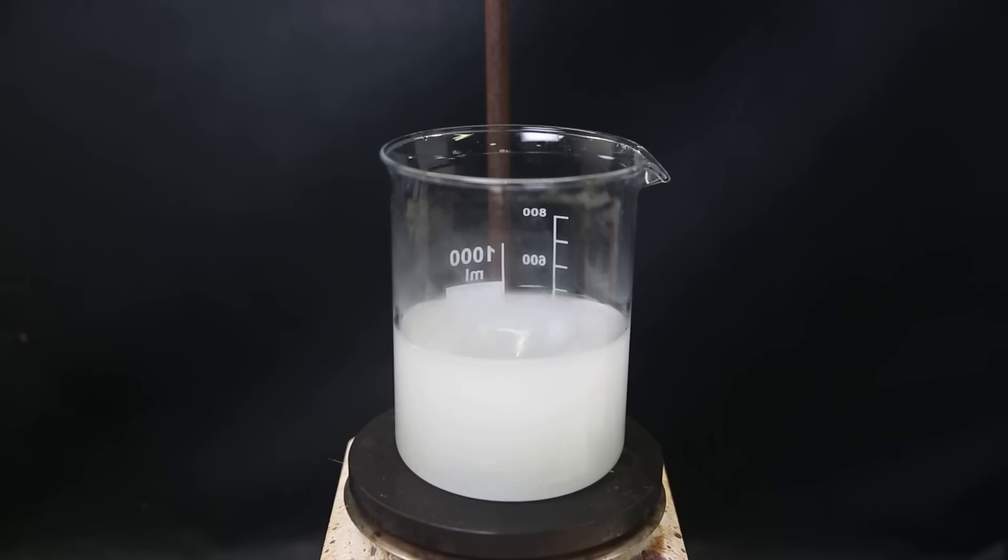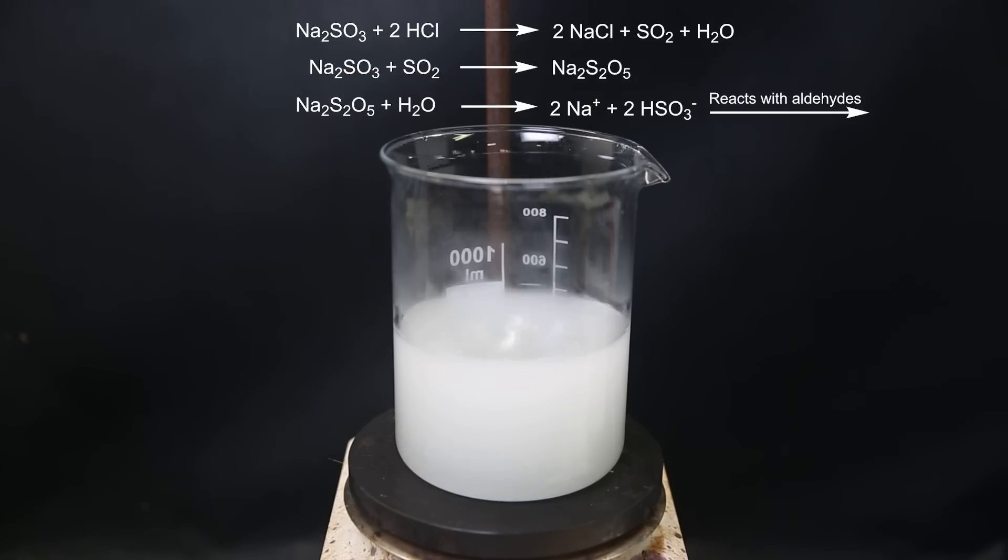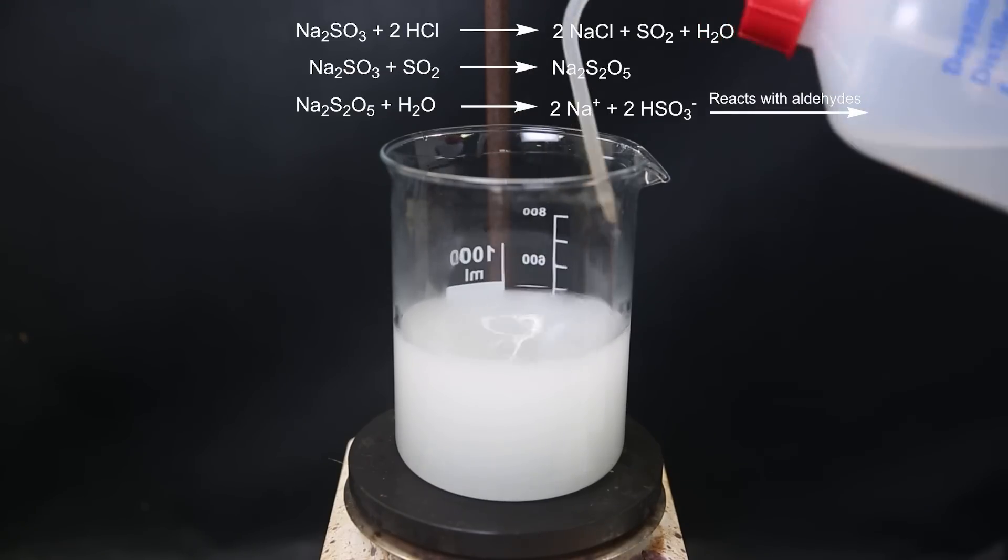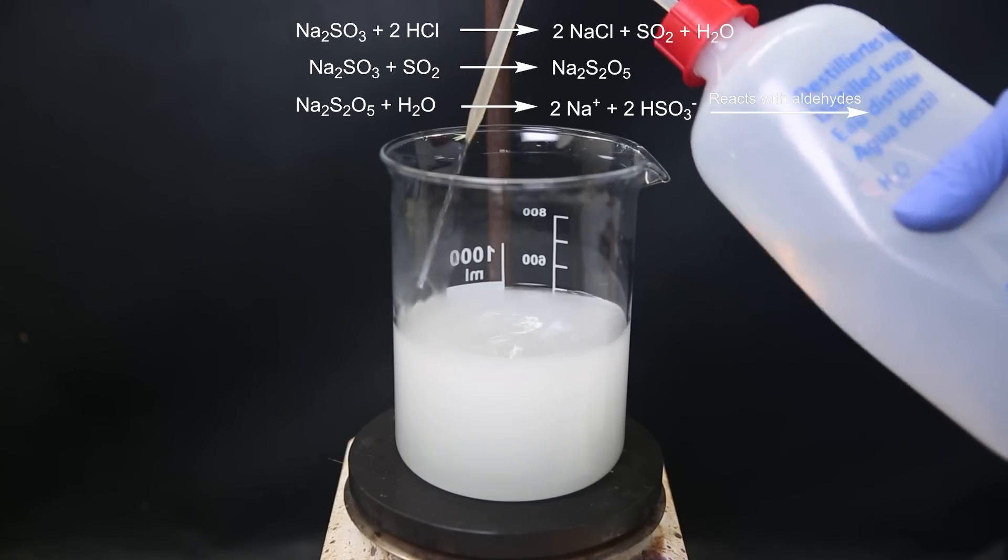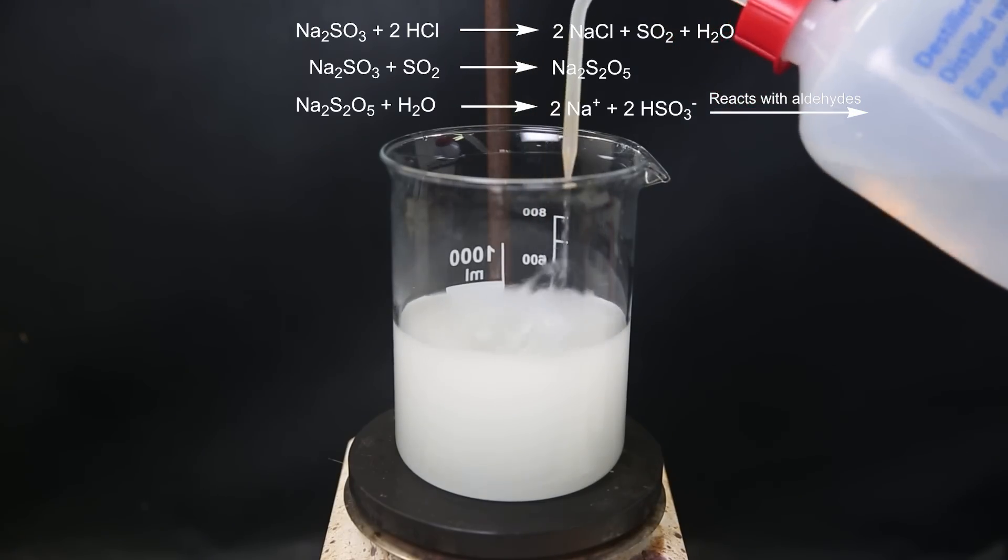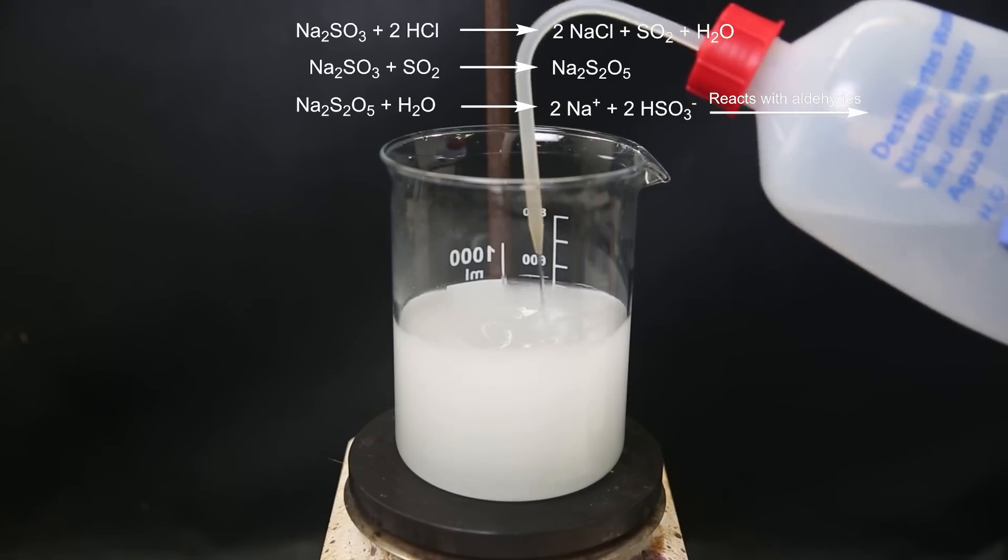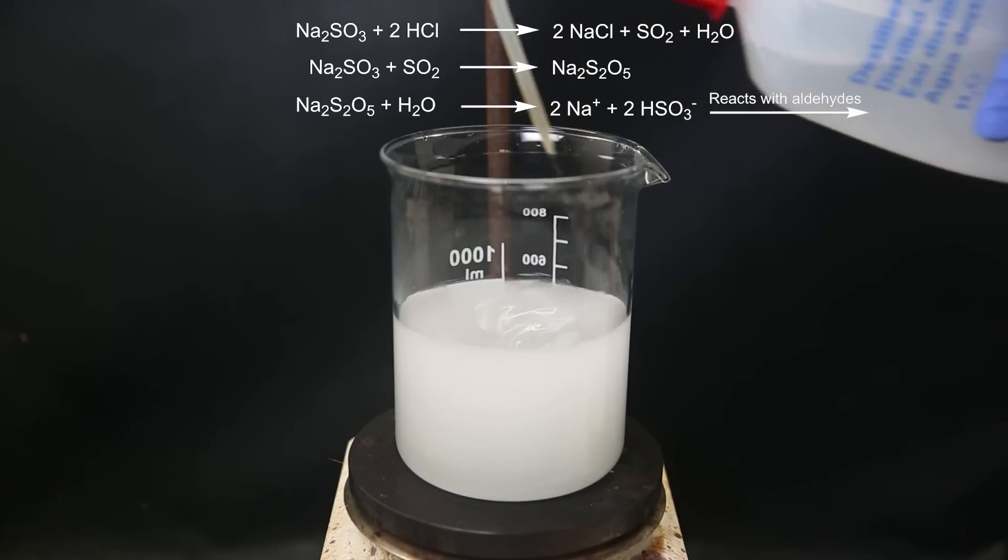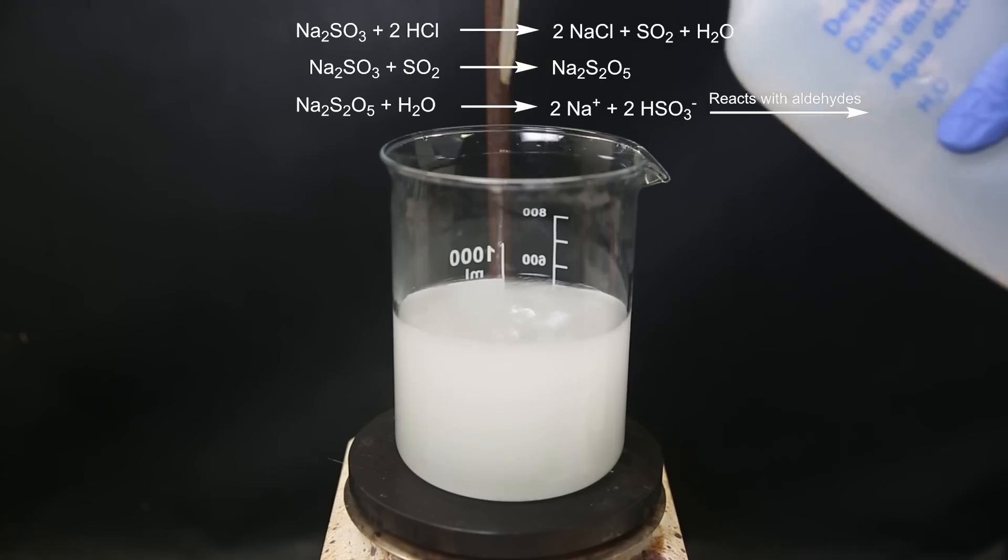One possibility why acid might be a problem is because the acid reacts with sodium sulfide to form sulfur dioxide. Sulfur dioxide then reacts with sodium sulfide to form sodium metabisulfide, which in solution forms sodium bisulfide, which can react with the benzaldehyde to form a complex that stays in the water layer and thus can't be extracted.